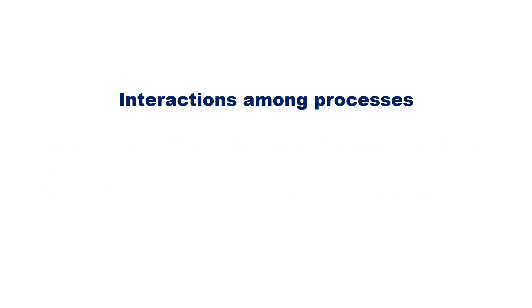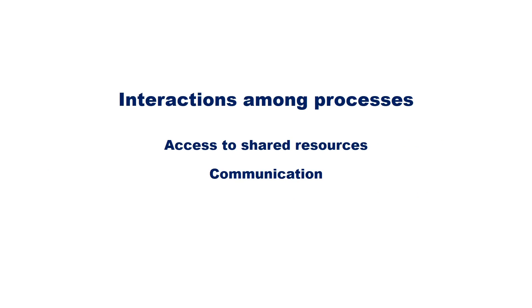Interaction among processes can be in the form of shared resources, exchange of information, or a process must wait for an event in another process, known as synchronization. Process synchronization was introduced to solve problems that may arise due to concurrent execution of processes.